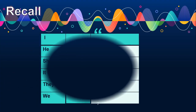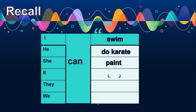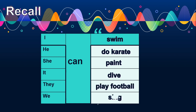Now let's recall. For I, he, she, it, they, we — you can use all these personal pronouns to use can or can't. For example: I can swim. He can do karate. She can paint. It — we can use it for animals and plants. It can dive. For example, the fish can jump in the water. They can play football. We can sing.